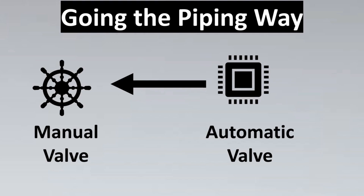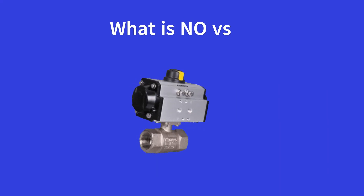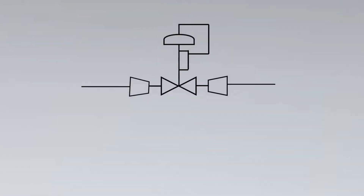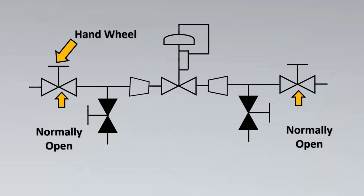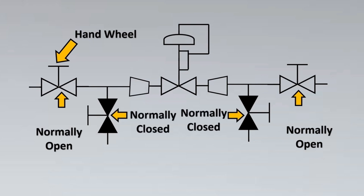Now let's understand NO/NC valves. Here are four valve configurations — from their symbols, we can see these are hand-wheel operated valves. In a P&ID, if valves are not colored, it means they are Normally Open (NO); if they are colored, they are Normally Closed (NC). So just by color, we can identify normally open and normally closed valves.